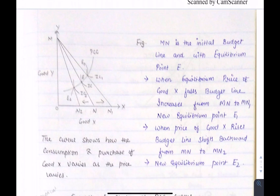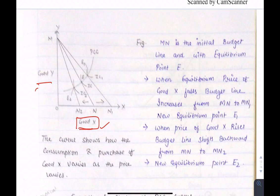Now let's see how the price consumption curve is derived. We take good X and good Y. We put changes in good X prices while keeping good Y prices constant and income constant. When the price of good X is reduced, consumption will increase and our budget line will shift from MN to MN1. Our new IC curve gives a new equilibrium. When prices increase, consumption will decrease and satisfaction moves to IC2. When we join all the equilibrium points, our PCC curve emerges.